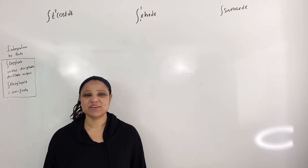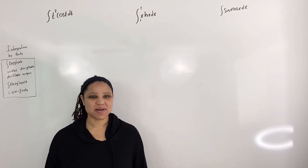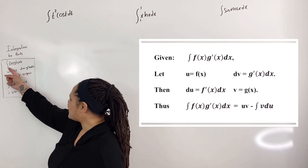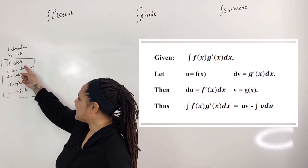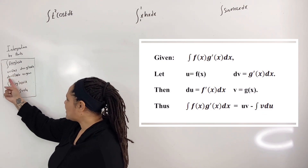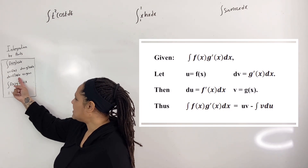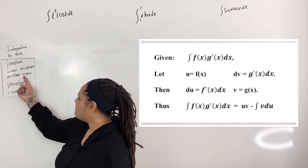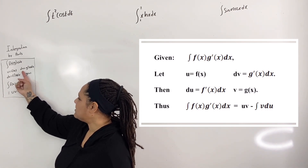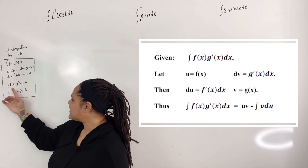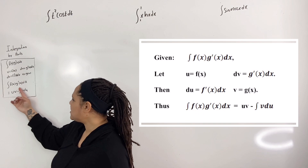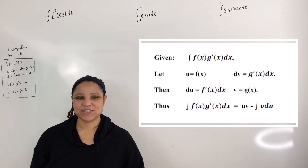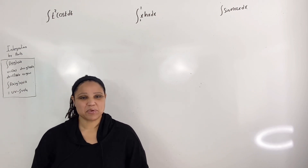In this video, we are going to evaluate integrals using integration by parts. The formula for integration by parts is as follows. Given the antiderivative of f(x)g'(x)dx, if we let u equal f(x), then du equals f'(x)dx. And if we let dv equal g'(x)dx, then v is the antiderivative of dv, which is g(x). So the integral of f(x)g'(x)dx equals uv minus the integral of v du. In some cases, we have to apply integration by parts more than once.